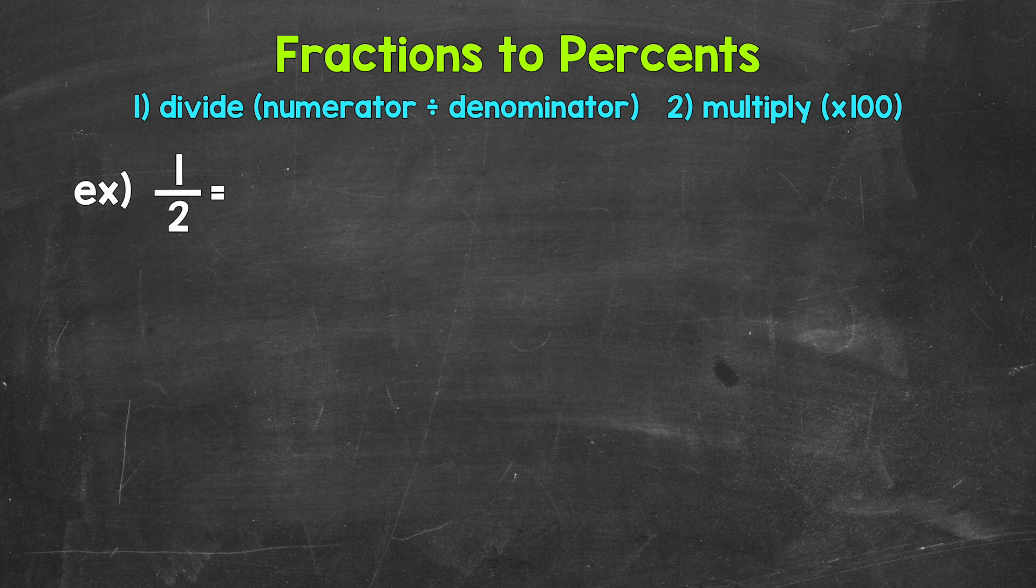This will give us a decimal. Once we have that decimal, we convert it to a percent by multiplying it by 100. And a quick way to multiply by 100 is to move the decimal twice to the right. So we need to start by converting this to a decimal by dividing.